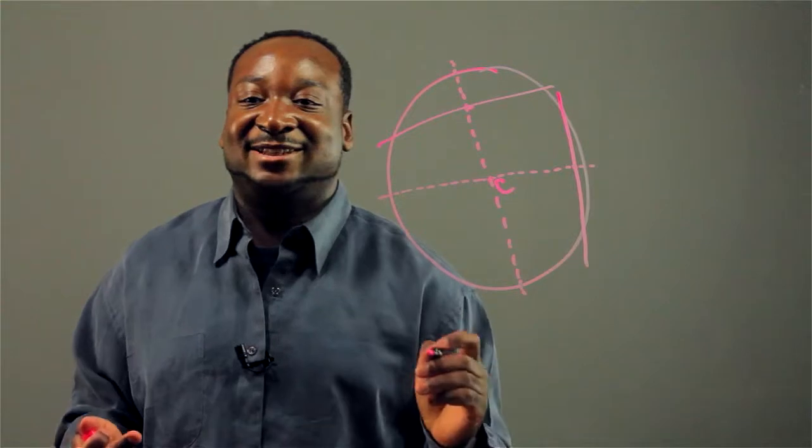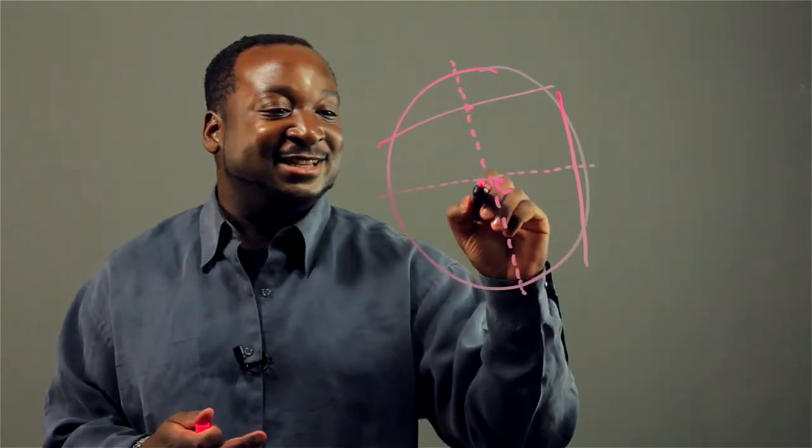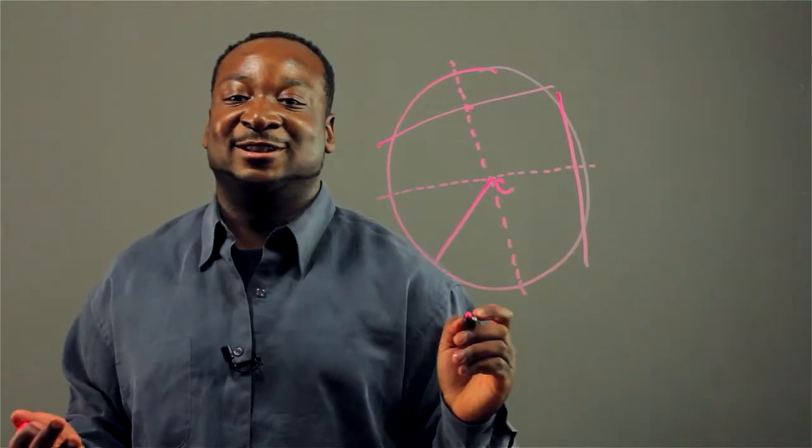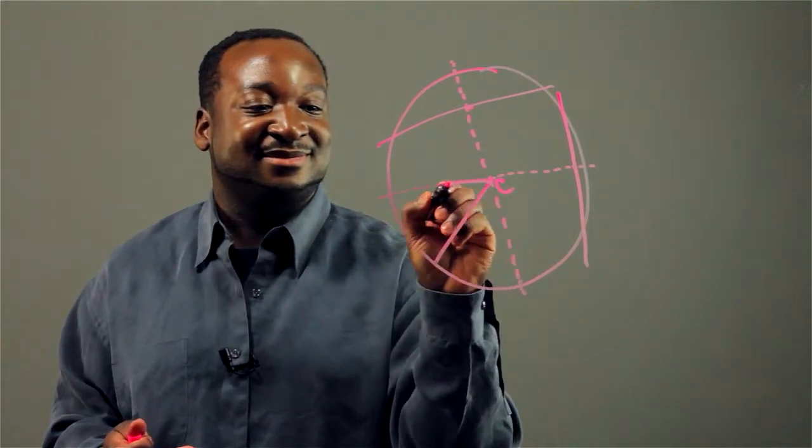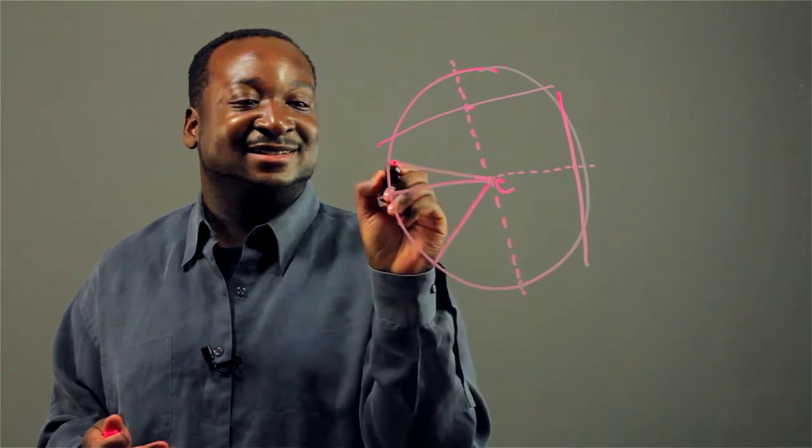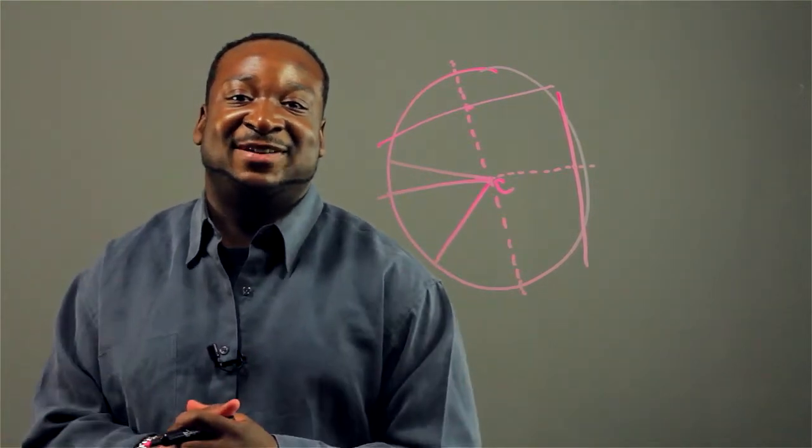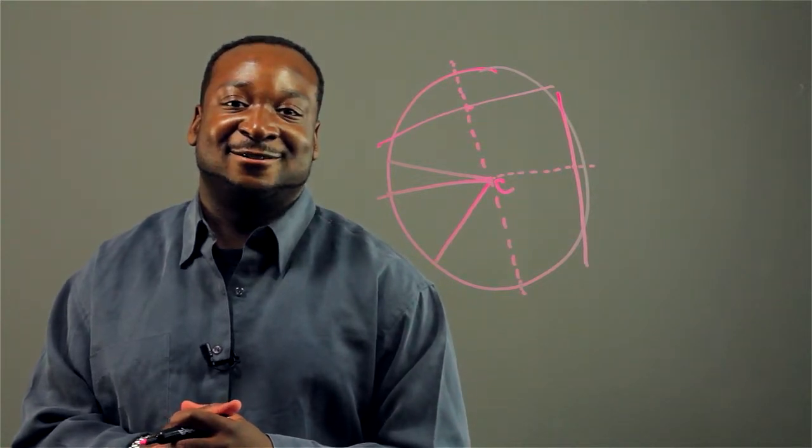And now that we have the center, we can mark an exact radius anywhere on the circle. Exact. So that's how you find the exact radius on the circle.